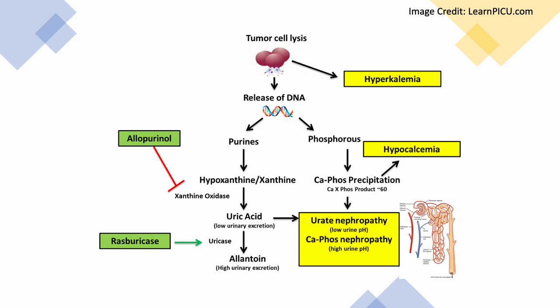It's important to know these four electrolyte abnormalities — hyperkalemia, hyperphosphatemia, hypocalcemia, and hyperuricemia — because all of the treatment we do is related to managing them. First, we aggressively flush the body with IV fluids to get rid of all of this extra contents from inside those cancer cells. We also use allopurinol or rasburicase, which work on specific enzymes in the uric acid pathway, as you can see on this slide.